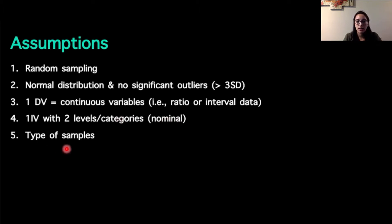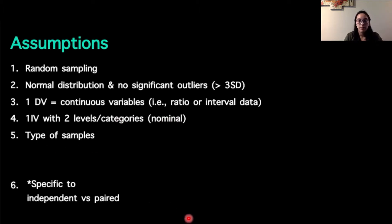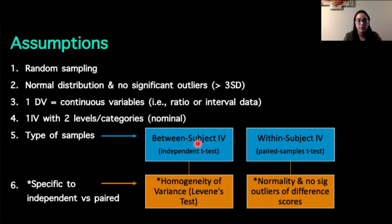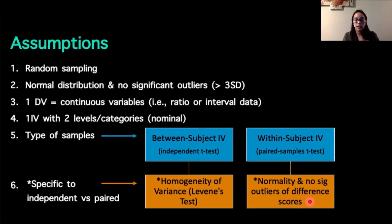The types of samples we know can be between or within subjects, and based on if you have between or within subjects, that will determine if you have a specific assumption attached to the test. When we have between-subject independent variables and we're running an independent t-test, we have to check for homogeneity of variance using Levine's test. If we have a within-subject independent variable and we've decided to use a paired samples t-test, we need to look at normality and determine that we have no significant outliers of difference scores.